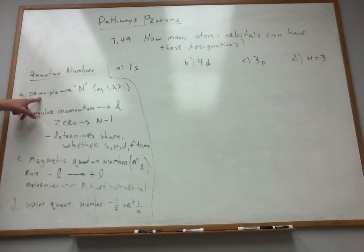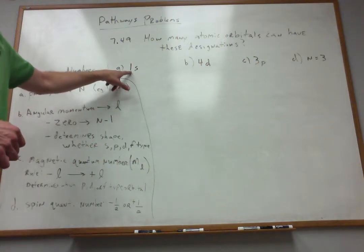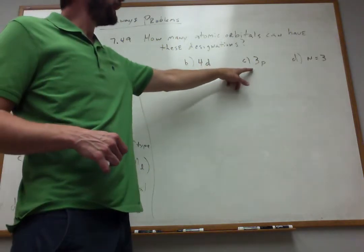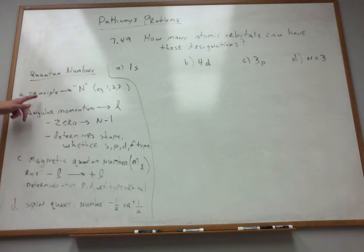The first one is the principal quantum number. It's given the symbol uppercase N. These numbers which are out in front, like 1, 4, 3, that's the principal quantum number. They take on integer values starting at 1.